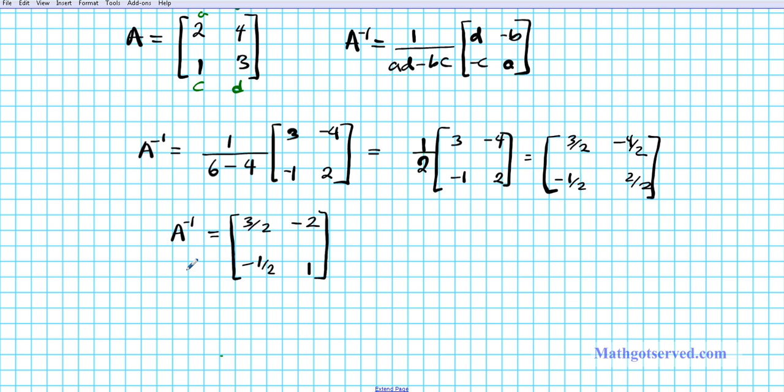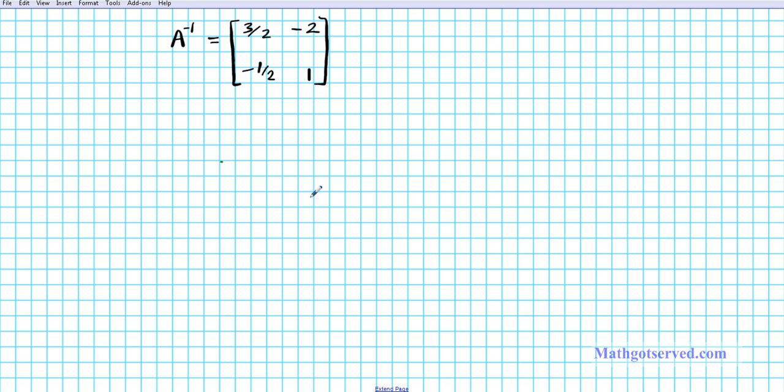We are also asked to verify that our solution is correct. To accomplish this, we're going to do a check. And our check just involves multiplying A times its inverse. And that should give us the identity matrix. So let's see if that's what happens here.